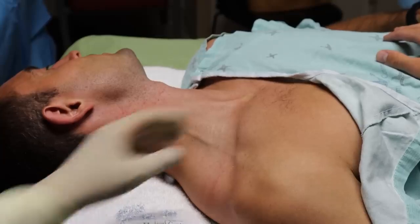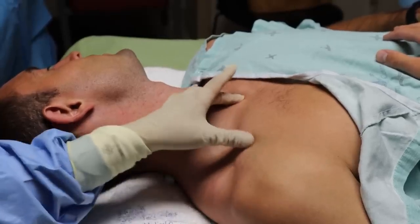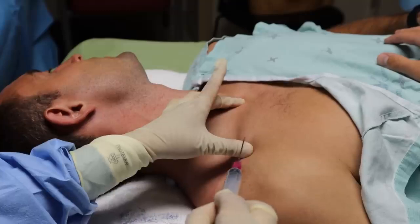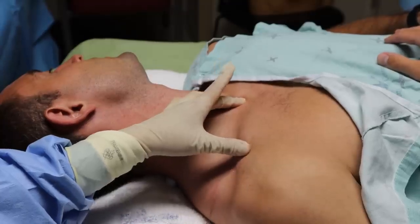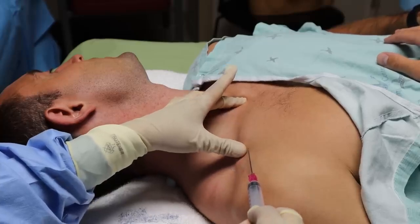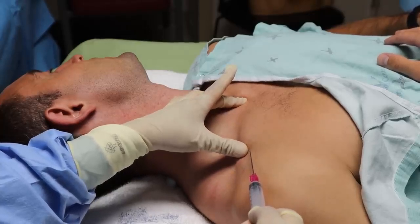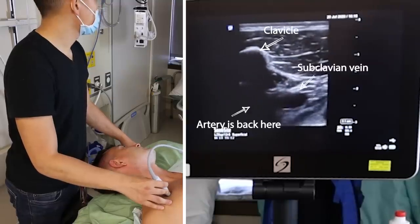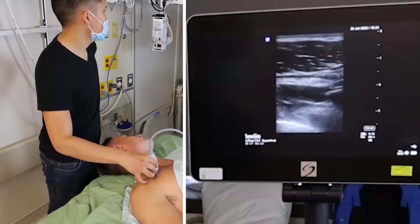For the blind landmark guided approach, put your index or third finger on the sternal notch, and then put your thumb on the prominent bump of the clavicle where it starts to bend toward the shoulder. Insert the needle next to your thumb and aim the needle at the finger on the sternal notch. Aspirate as you advance and you'll hit the vein. Here's the infraclavicular short axis view of the subclavian vein. And here's long axis.